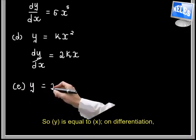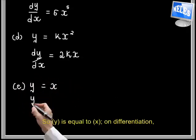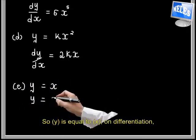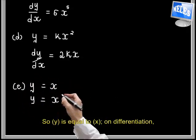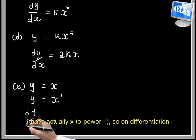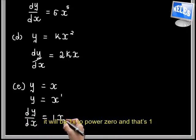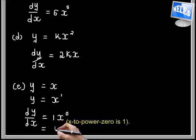So for e, y is equal to x — that's actually x to the power of 1. On differentiation it will be 1 times x to the power of 0, and that is just 1, since x to the power of 0 is 1.